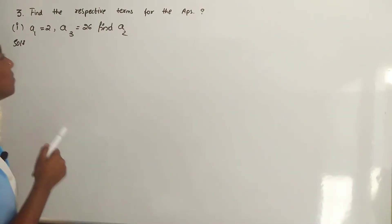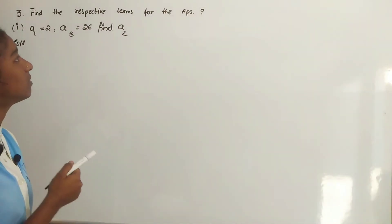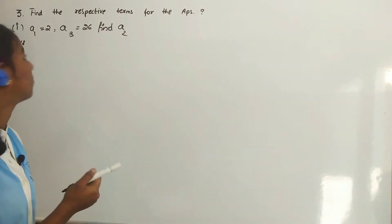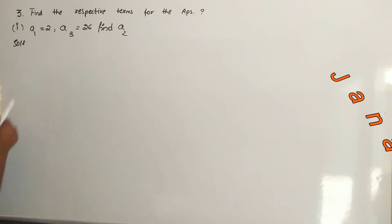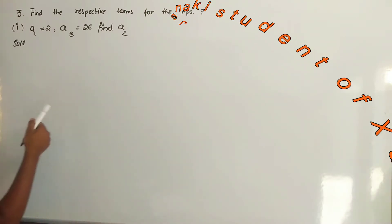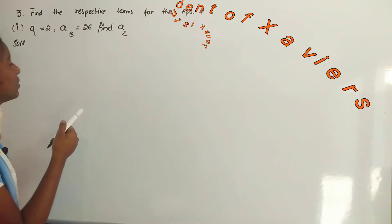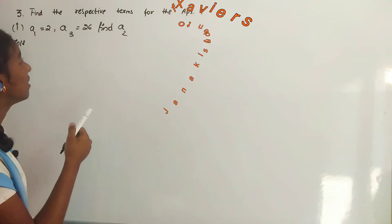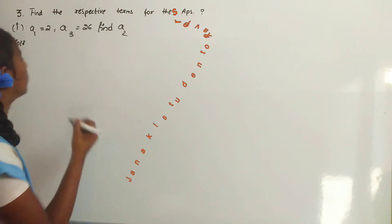Find the respective terms for the AP. A1 is equal to 2, A3 is equal to 26. Find A2.